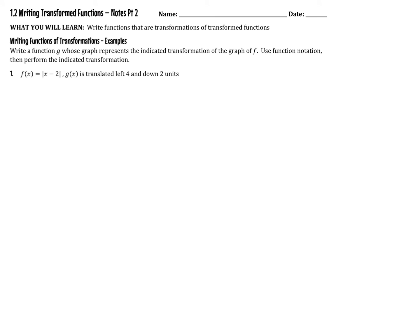We're going to start by doing exactly what we did in the last video. We're going to look at a generic function g — we know that g is a function of f — and we're going to perform the transformation specified here. This says that g of x is equal to a translation 4 to the left from f and down 2. So writing this in function notation: 4 to the left means plus 4 on the inside, and down 2 means minus 2 on the outside. This is what we did in the last video.